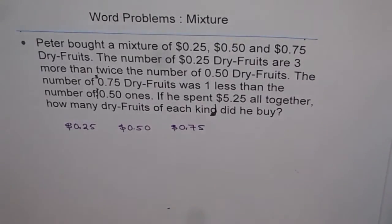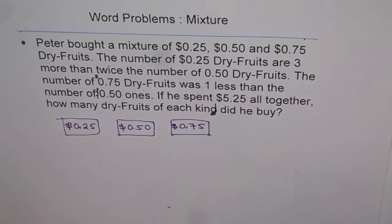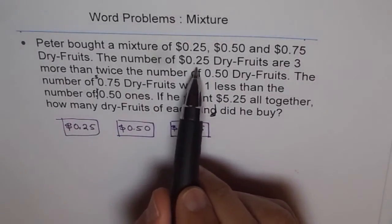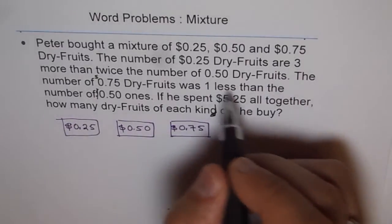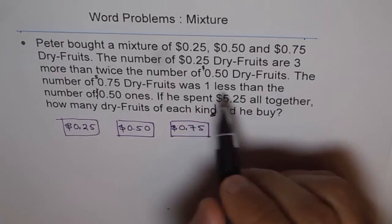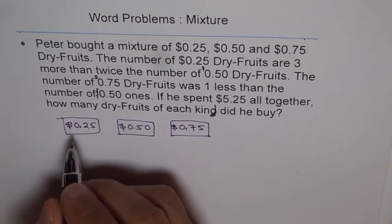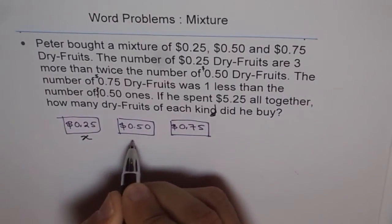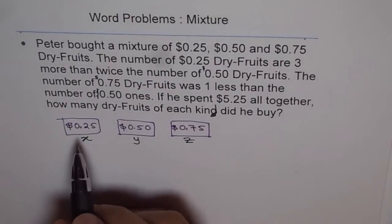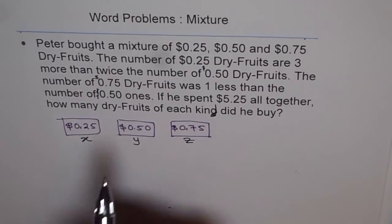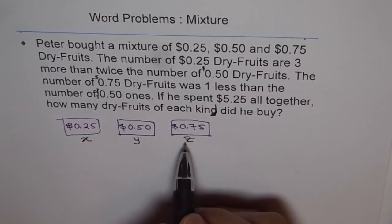So these are kind of packets — let's say each is one packet, and each packet is costing these many cents. Now let's define variables: let X be the number of packets for dry fruits costing $0.25, Y be the number of packets for dry fruits costing $0.50, and Z be the number of packets costing $0.75 each.